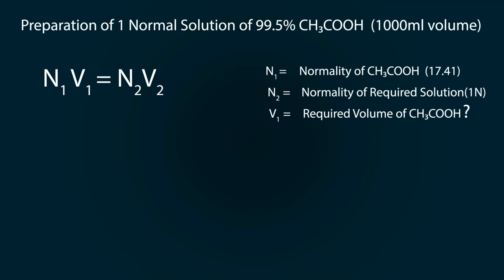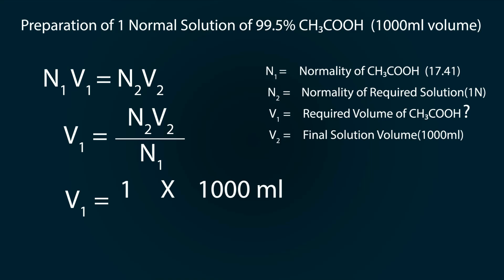V₁ is the required volume and V₂ is the final solution volume which is 1000 milliliters. Now rearrange the formula and by putting in the values, we get our required volume. So our required volume is 57.4 milliliters.